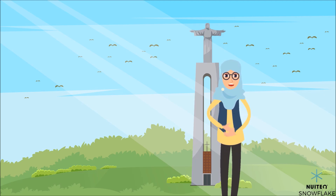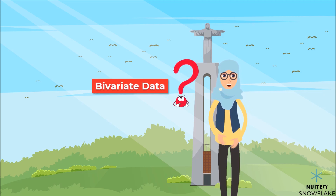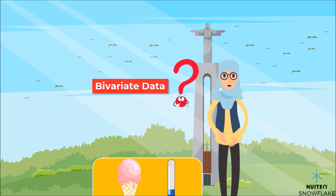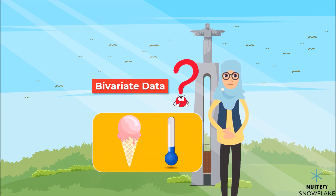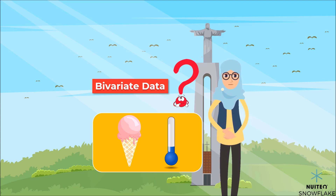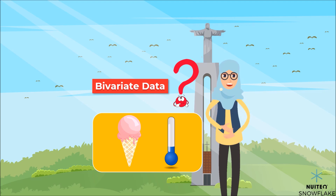I'm wondering — have you heard about bivariate data? Well, that is data for two variables, usually two types of related data. Like ice cream sales versus the temperature on that day. The two variables are ice cream sales and temperature. Well, let's search online to learn more about these concepts.